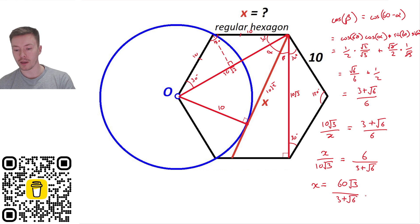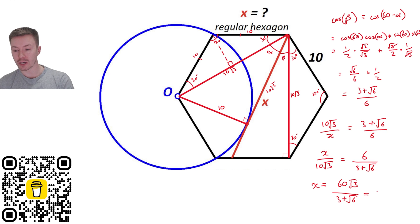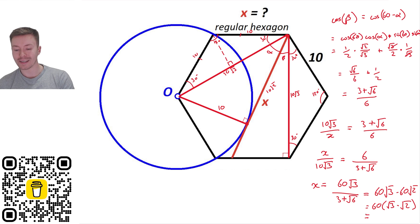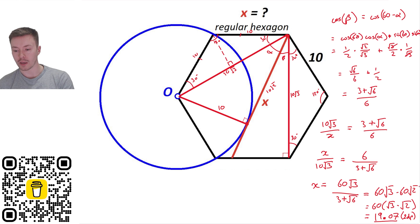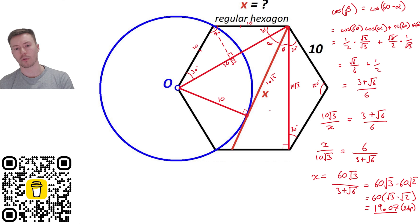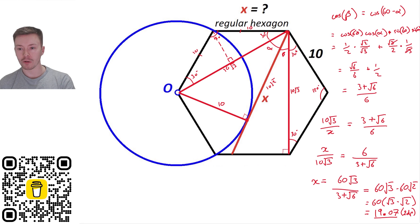Rationalizing the denominator gives x = 60√3 − 60√2, which can be written as 60(√3 − √2). As a decimal, that gives approximately 19.07 to two decimal places. No units were given for the side length of 10, so we'll just leave it as 19.07.